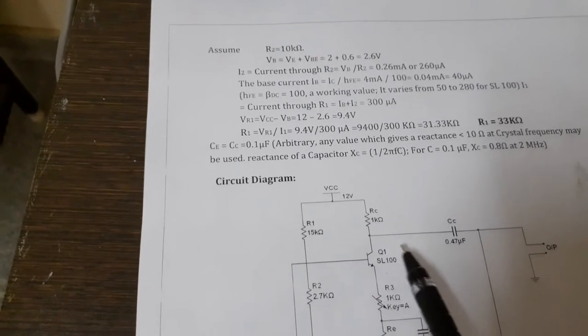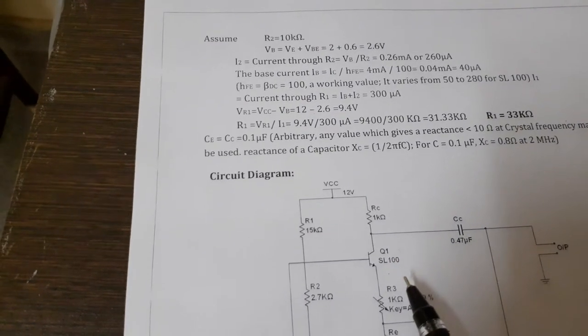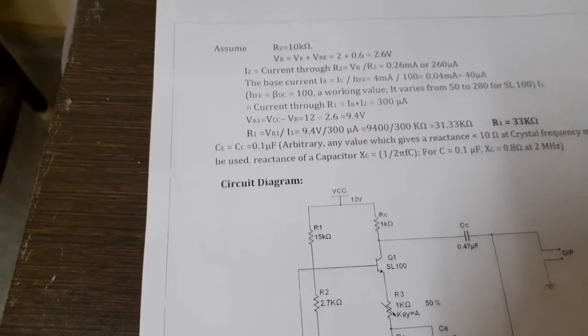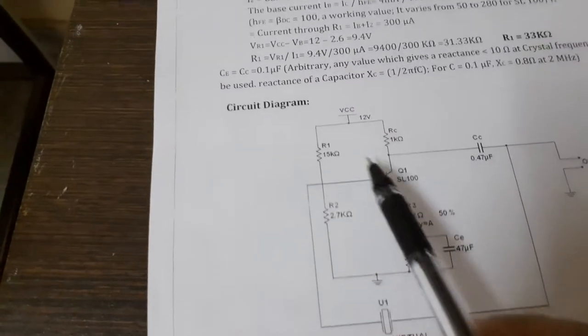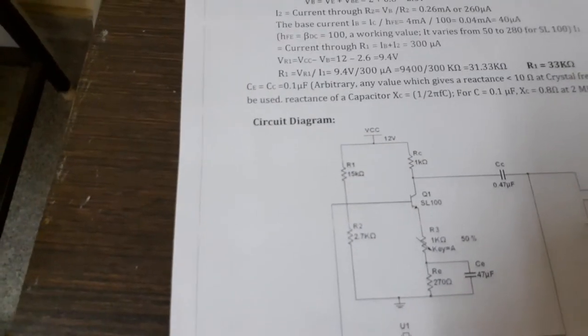And one, this is an amplifier. And one is, you can see this is a feedback section of a crystal oscillator.